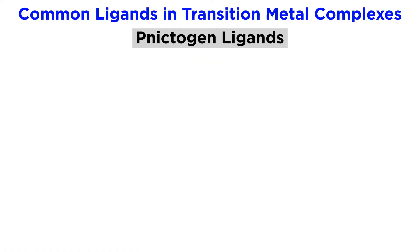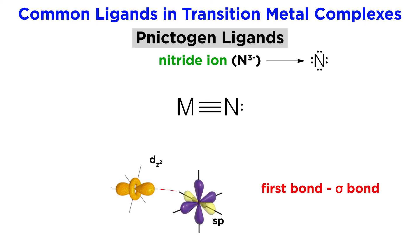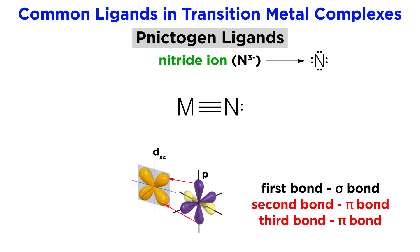Moving on to nictogens, there are a number of nitrogenous ligands. The nitride ion has a three minus charge and thus four lone pairs. Three bonds can be made to a metal atom, one of which, a sigma bond, will occur between the sp hybrid orbital on nitrogen and the dz squared orbital on the metal, and the other two are pi bonds between the two unhybridized p orbitals on nitrogen and the dxz and dyz orbitals on the metal.